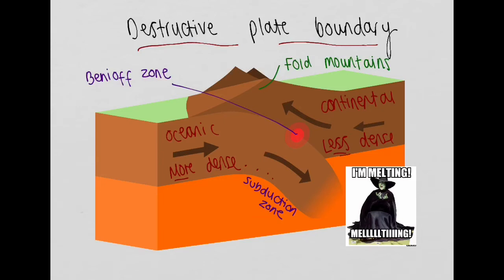The subducting crust is subject to friction, increasing pressure and heat, causing the plate to melt. As these plates grind together through the process of subduction, earthquakes can result due to the high pressure and large release of seismic energy.